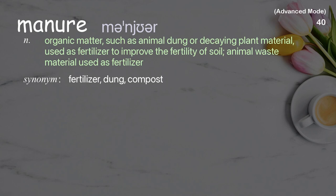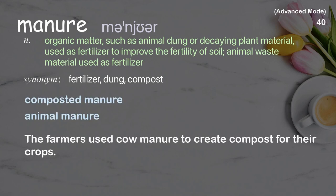Manure. Organic matter, such as animal dung or decaying plant material, used as fertilizer to improve the fertility of soil. The farmers used cow manure to create compost for their crops.